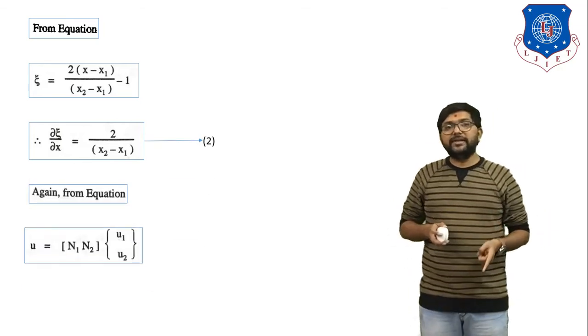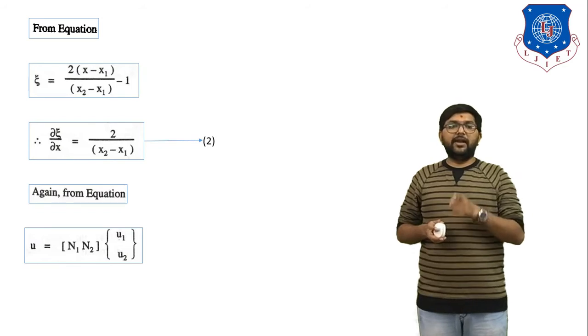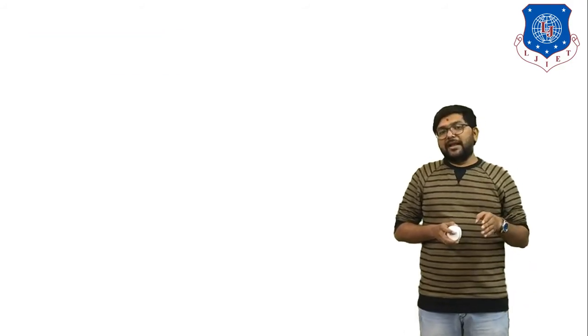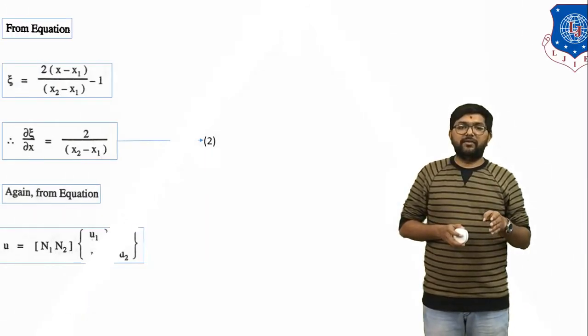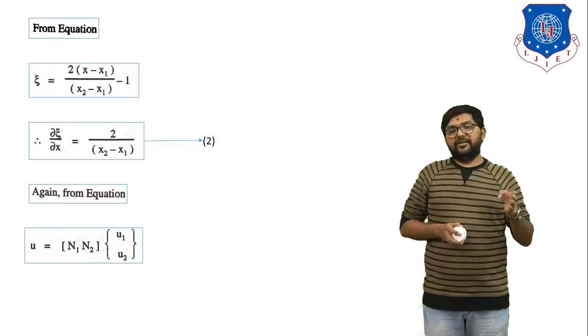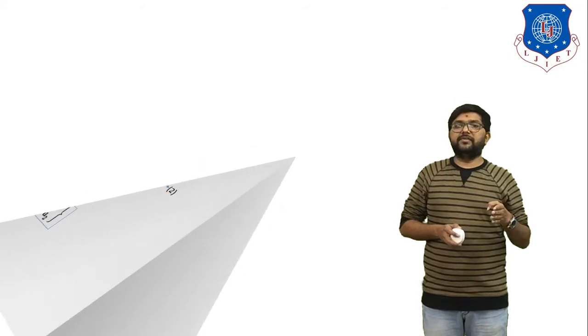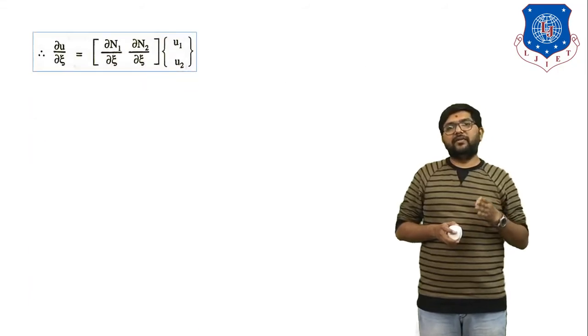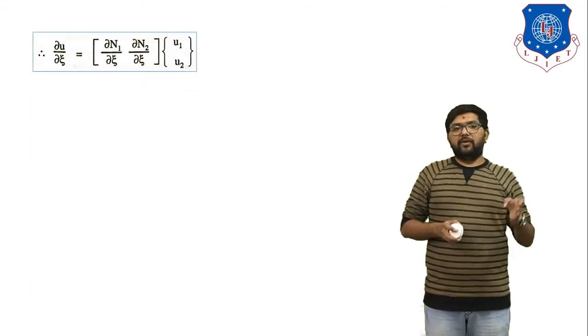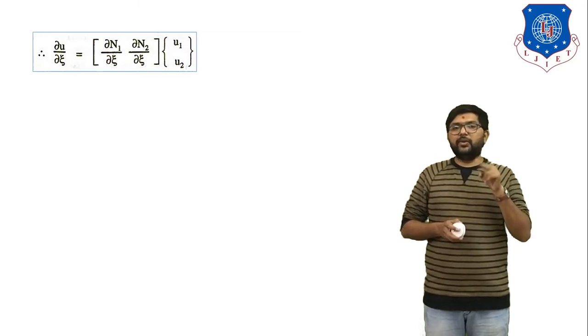From the displacement equation u equals [N1, N2] {u1, u2}, which we already derived, we now differentiate with respect to zeta. So del u / del zeta equals (del N1 / del zeta) and (del N2 / del zeta) multiplied by {u1, u2}.